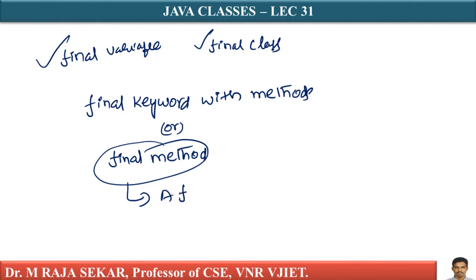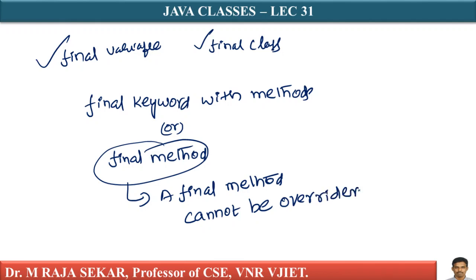A final method cannot be overridden. This point is important — a final method cannot be overridden. Generally we can overwrite any method of a superclass in a subclass. But sometimes the superclass may decide that a method should not be allowed to be overwritten, because it thinks that functionality should not be changed by the subclass. Then you declare it as a final method in the superclass.